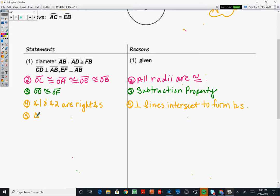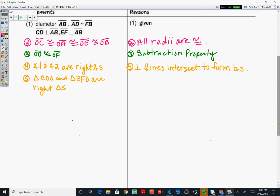So that's triangle, I'm going to say CDO and triangle EFO are right triangles. And that's because a right triangle has one right angle.